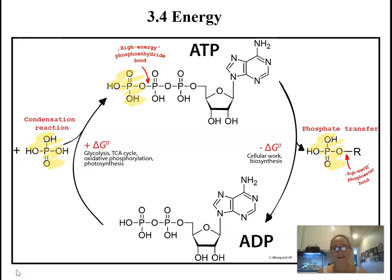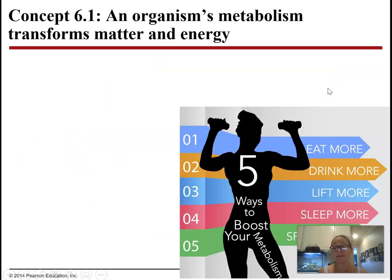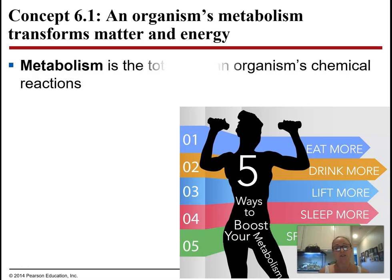In this video we're going to talk about energy and metabolic pathways as a general intro. This is part of AP Biology's 3.4 topic, which leads into photosynthesis and cellular respiration. When you hear 'high metabolism,' 'fast metabolism,' or 'slow metabolism,' metabolism is the totality of an organism's chemical reactions — basically the sum of all chemical reactions within your body.